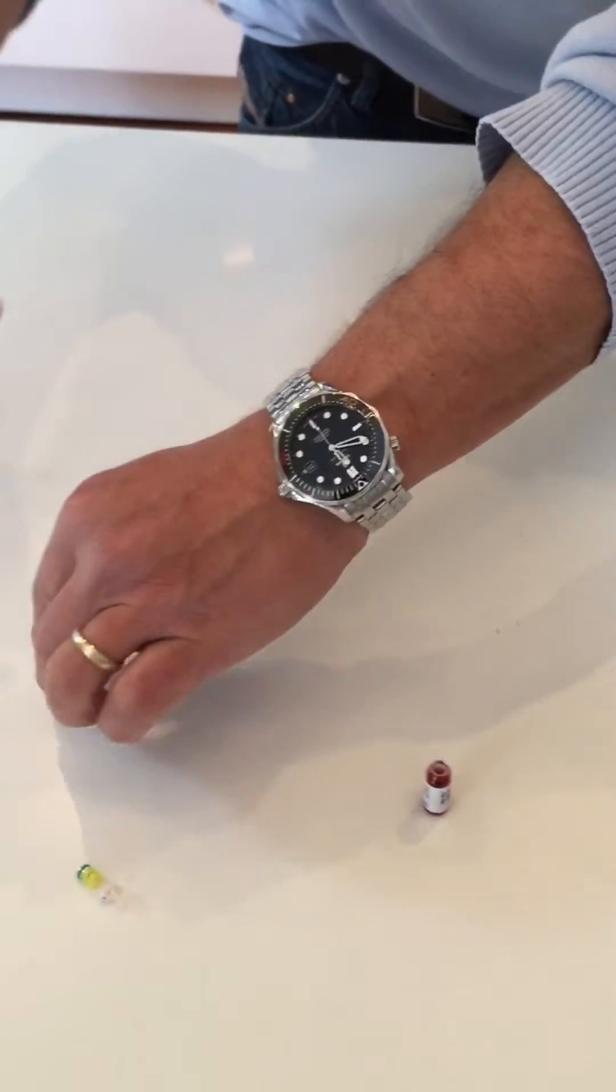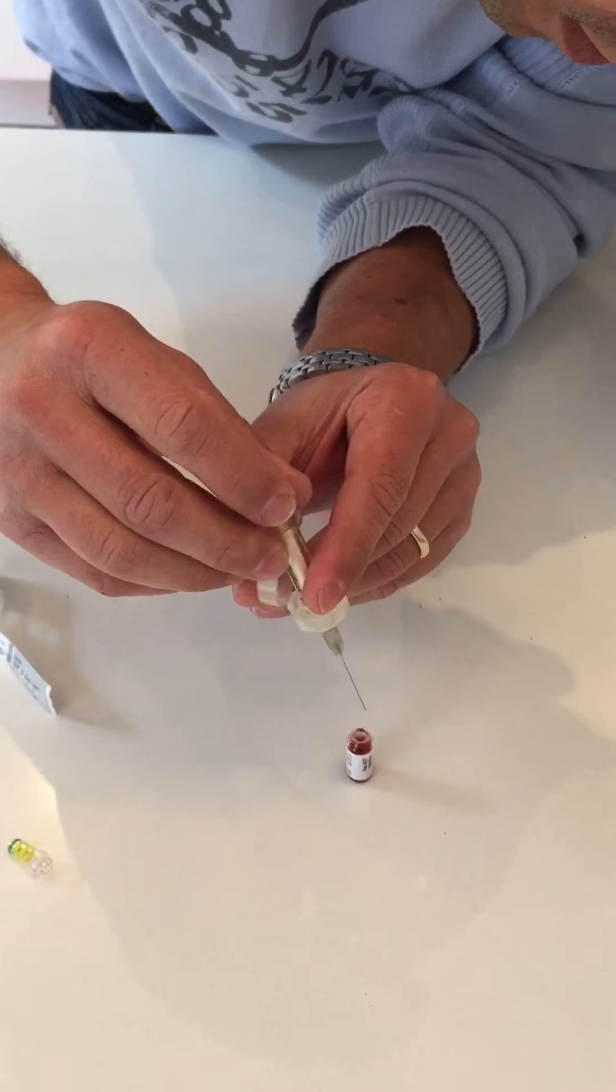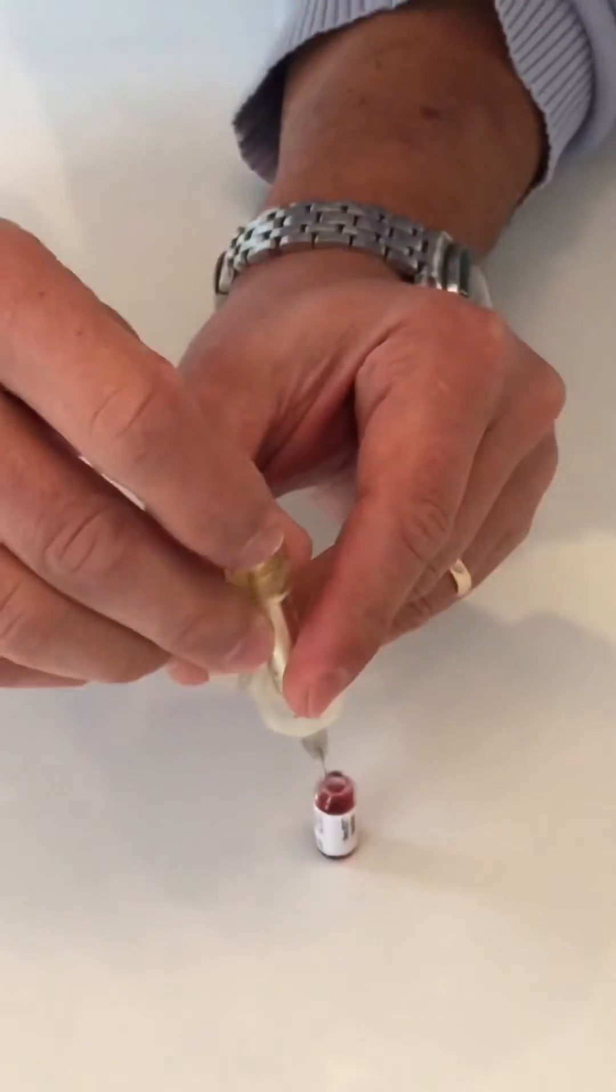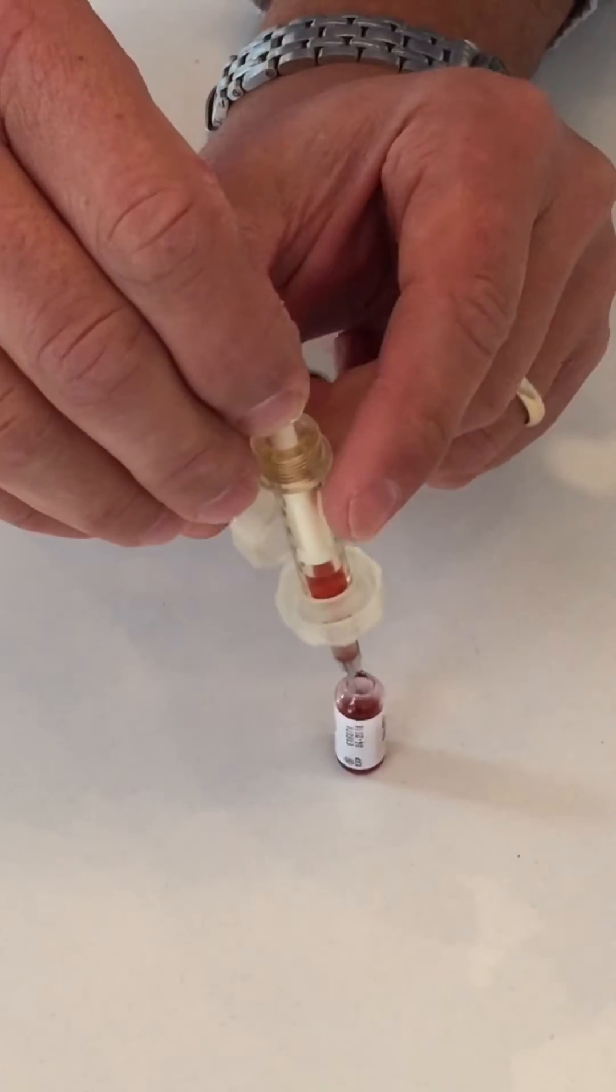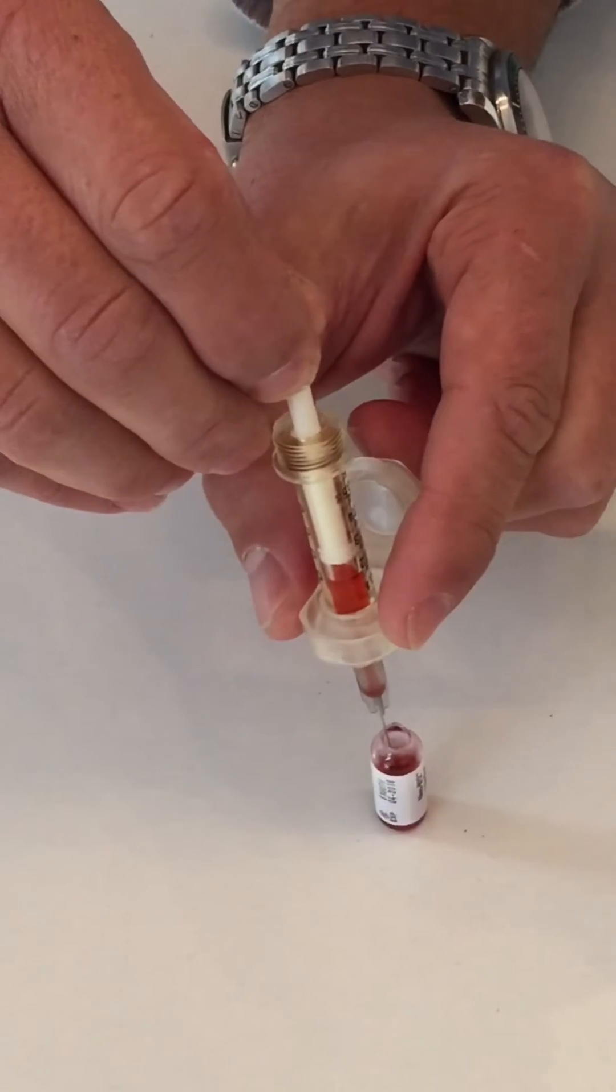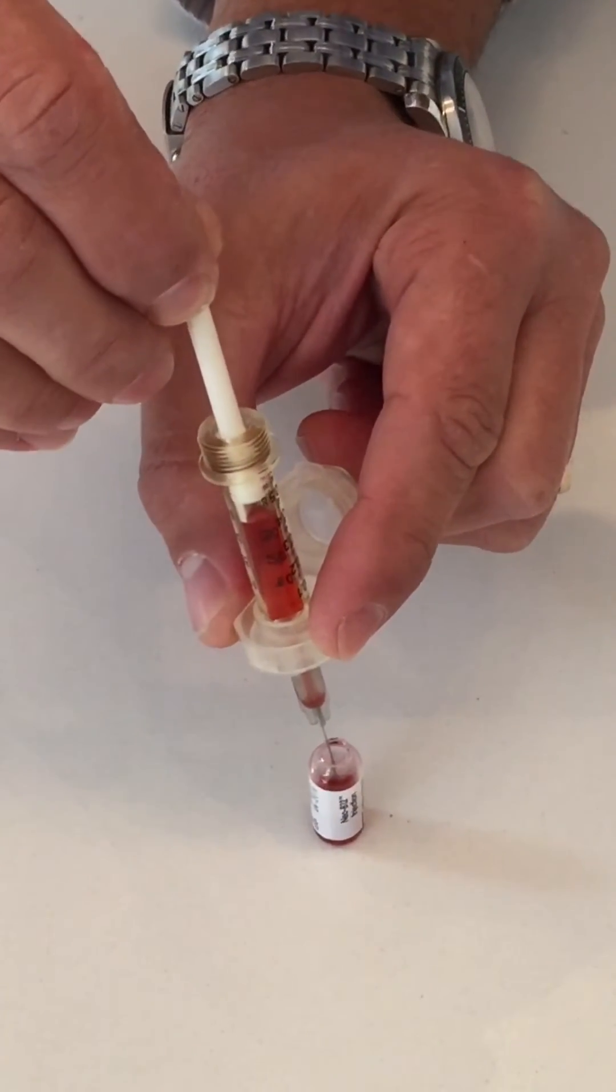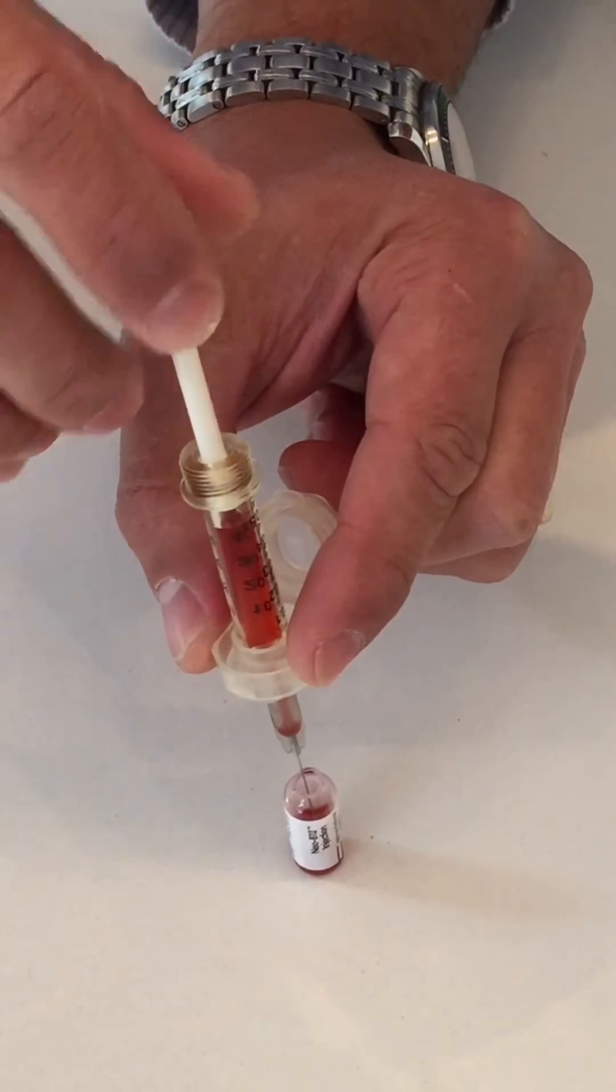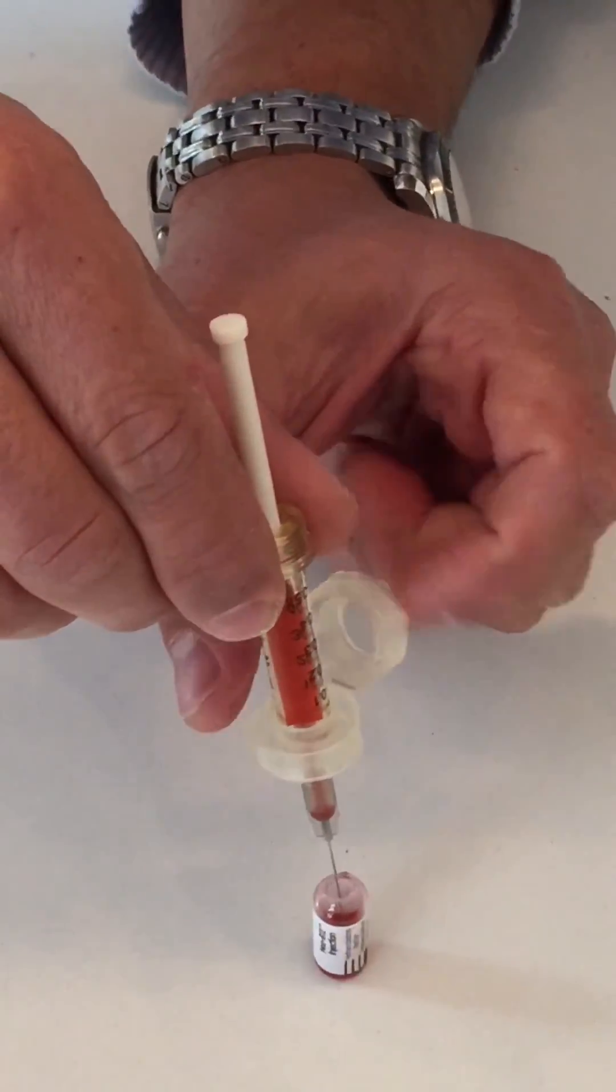Take the needle out, insert it into the vial, and gently draw the desired dose. In my case, I take one ml once a week, so I do two injections of half a ml.